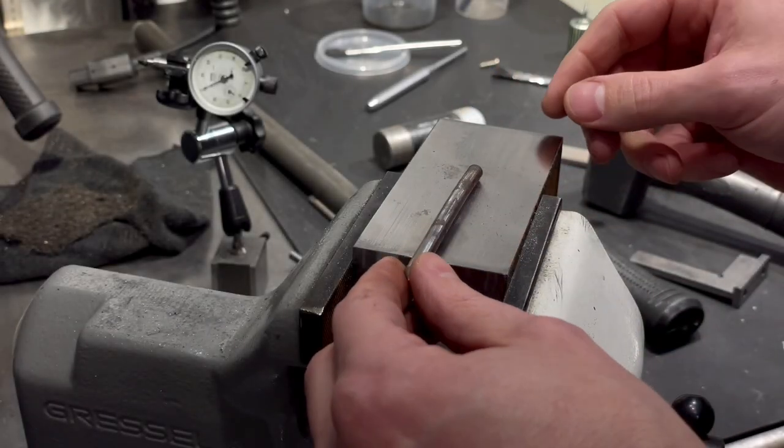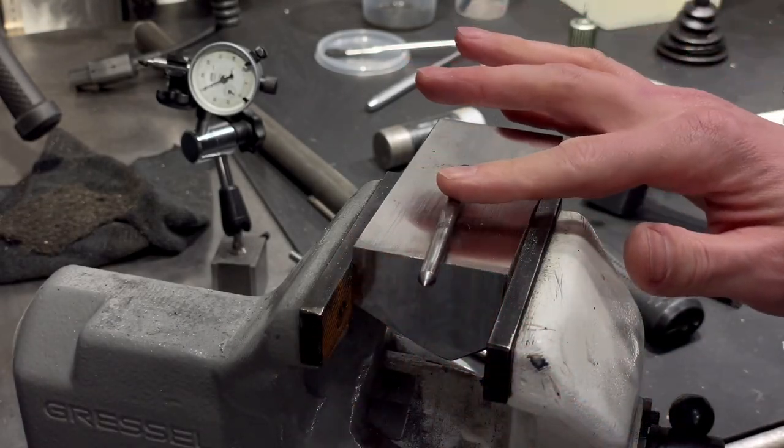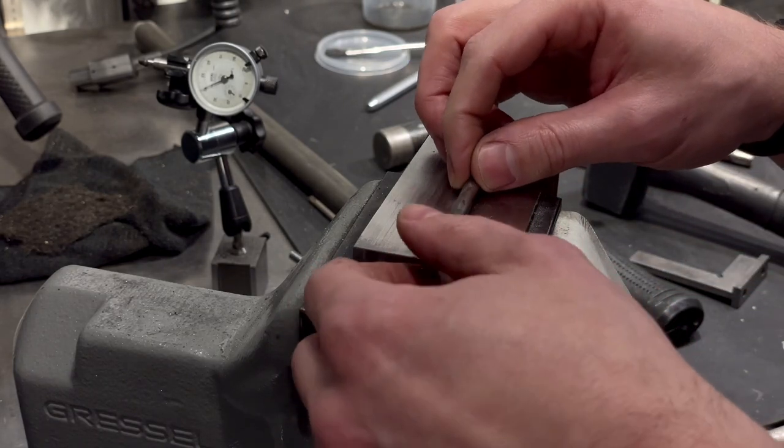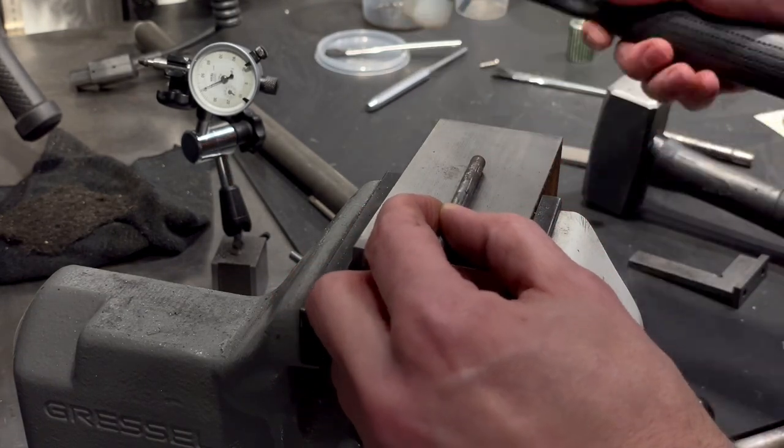Next I'm going to straighten the rod, which I pulled out before. For that I'm using an improvised anvil and the rod straightening tool.